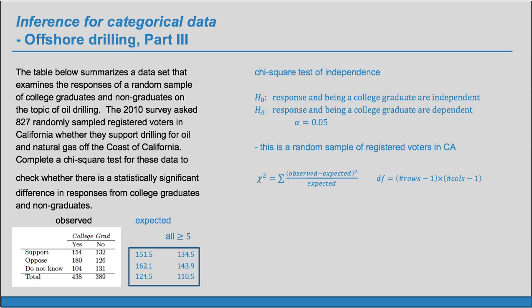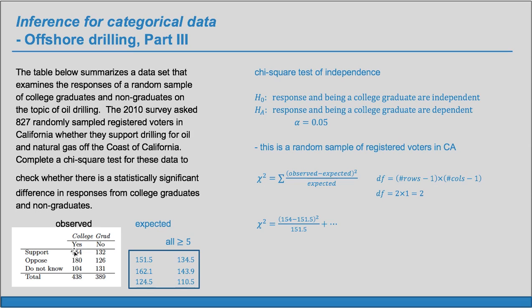Our chi-squared statistic is given by summing (observed minus expected) squared divided by expected, over all cells. The degrees of freedom is the number of rows minus 1 times the number of columns minus 1. So our degrees of freedom is 3 minus 1 times 2 minus 1, which is 2 times 1 equals 2. For each cell, we take the observed — for example 154 — minus the expected, square that, and divide by the expected. We have to do that six times.